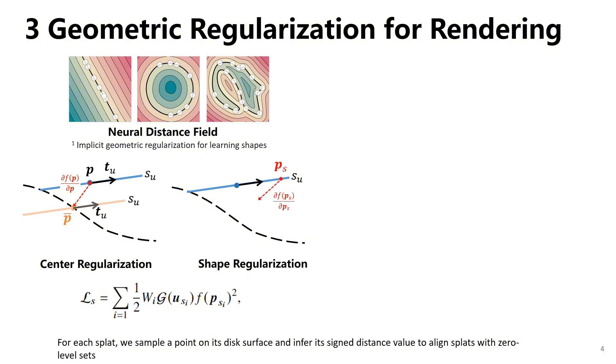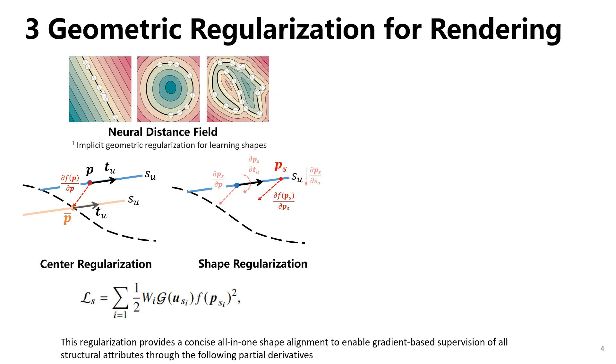For each splat, we sample a point on its disk surface and infer its signed distance value to align splats with zero level sets. This regularization provides a concise all-in-one shape alignment to enable gradient-based supervision of all structural attributes through partial derivatives.